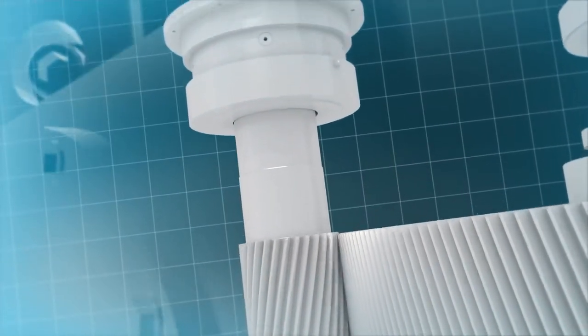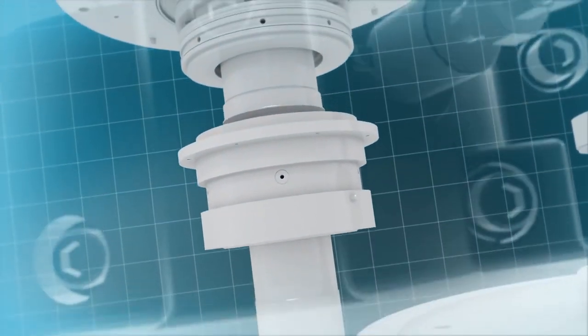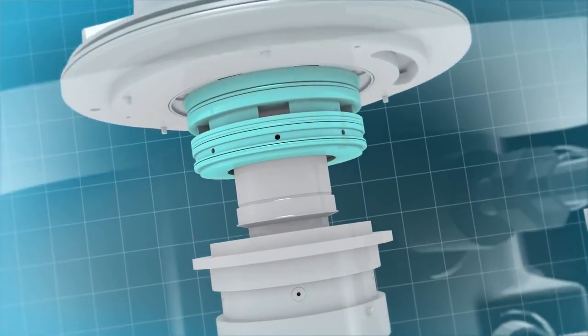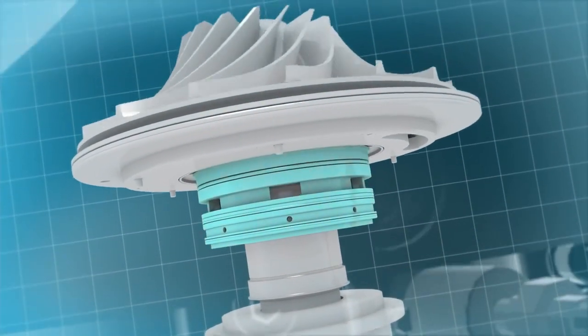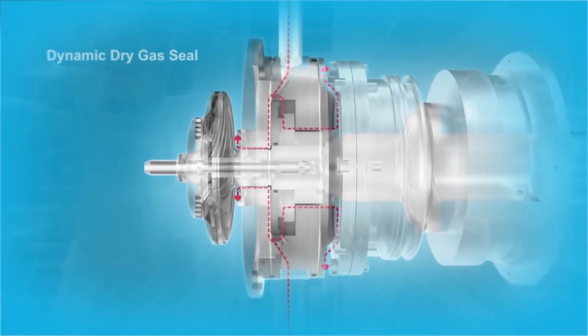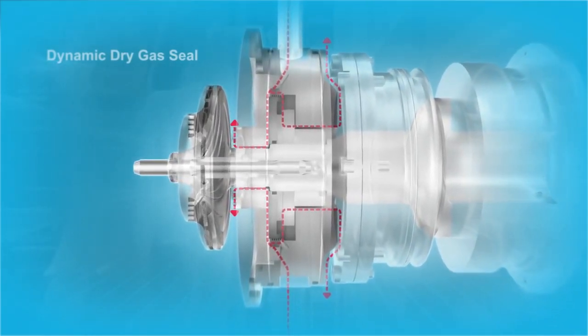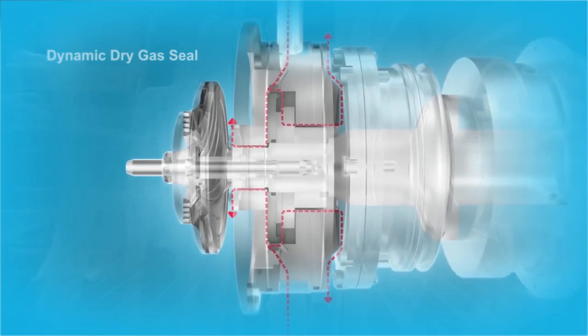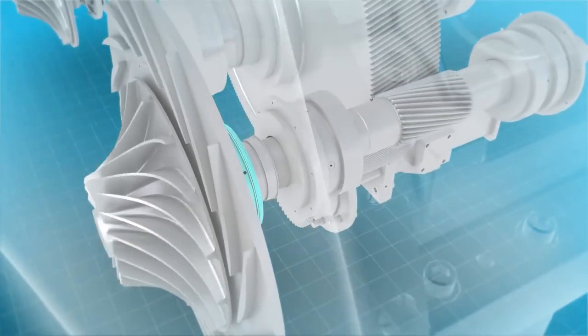For applications where process gas leakage is restricted, or when process gas needs to remain within the system, our integrally geared compressors can be built with dynamic dry gas seals. These seals can be supplied in single, double, or tandem arrangements, depending on the application.